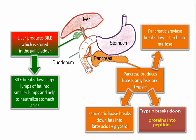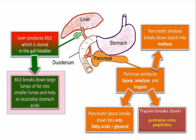In the small intestine, lipids are physically digested further by a chemical called bile. Bile is made in the liver but is stored in the gallbladder. When lipids enter the small intestine, bile is secreted into the small intestine to break the lipids down into fat droplets, creating more surface area for enzymes to work on.